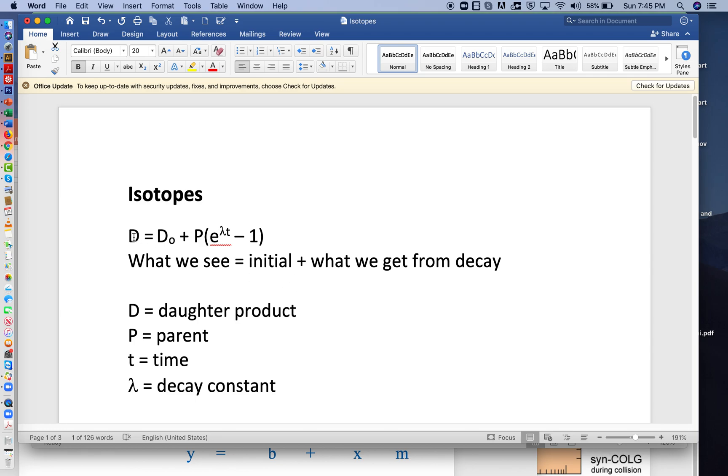The general decay equation we use in geology relates a daughter product—the amount of daughter isotope we see in a rock—equal to the initial amount we find in the rock, D sub zero, plus whatever we get from decay. D is what we see in a rock. D naught is the initial amount of that isotope the rock started with.